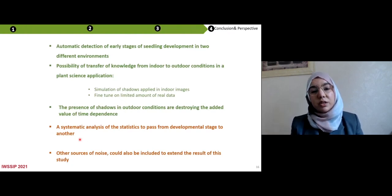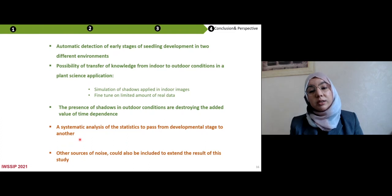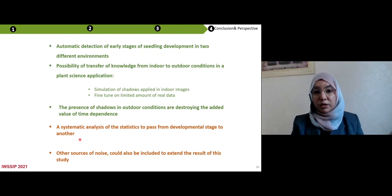So this is our results. So to conclude, in this communication, we have considered the automatic detection of earlier stage in seedling development. And we have investigated the possibility to transfer knowledge from indoor to outdoor condition in plant science application using simulation of shadow applied in indoor datasets and the fine-tune on limited amount of data. And we demonstrated in this work, the presence of shadow in outdoor conditions are distorting the added value of time dependence. As a perspective, we can work in semantic analysis of the kinetics to pass from development stage to another one. Also, other sources of noise could be included to extend the results of this study. And thank you for your attention.